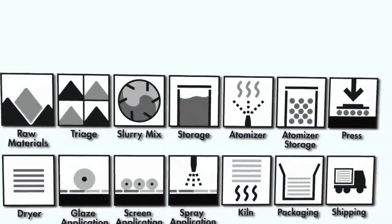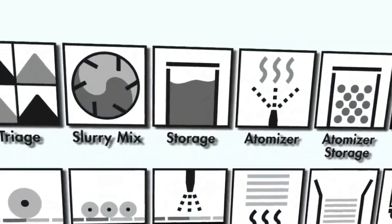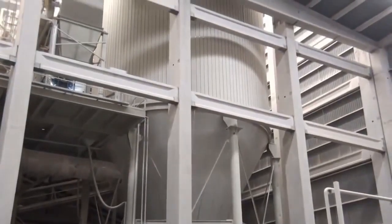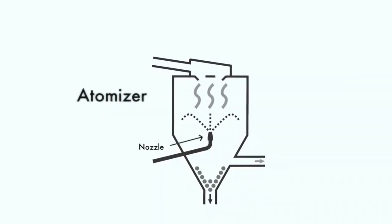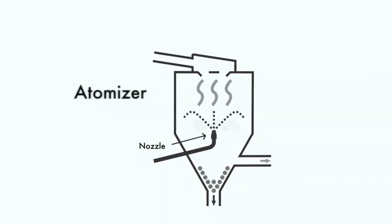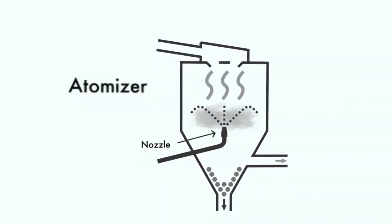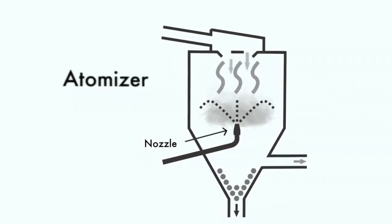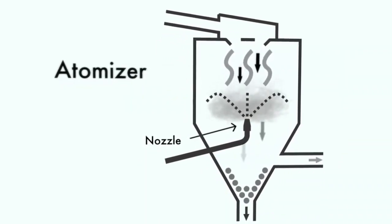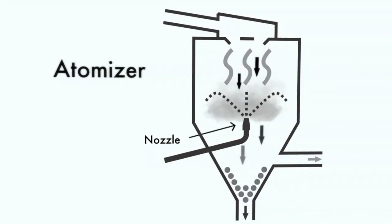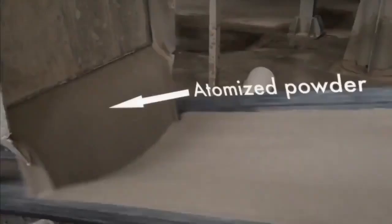The slurry is then transferred to large underground storage tanks, then fed into an atomizer. The atomizer is equipped with a nozzle. The nozzle sprays the slurry into the middle of a large tank that is fed with a current of hot air. As the slurry becomes airborne, it rapidly dries to form atomized powder.